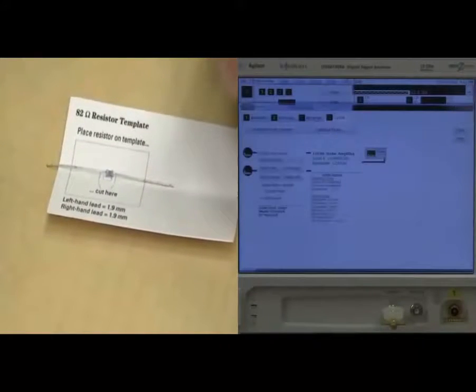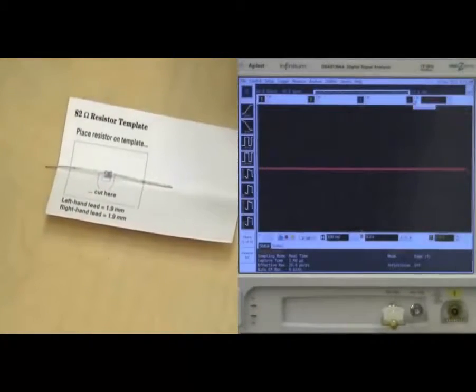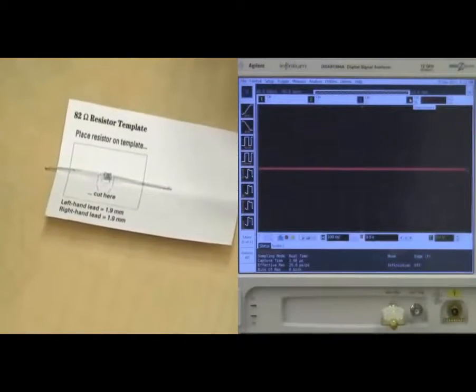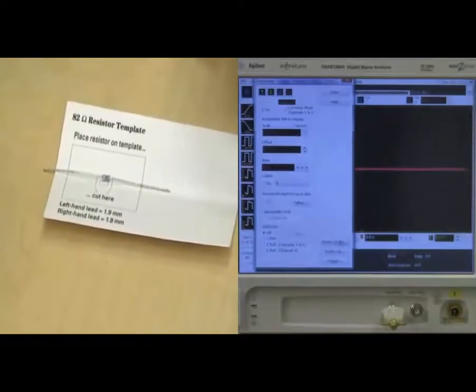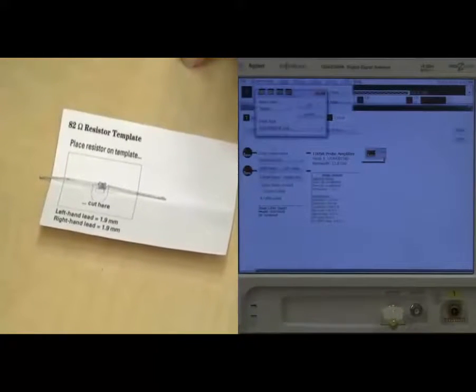Now, when it's time to calibrate the probe, we'll want to select the correct channel, which in this case is channel 4, and we'll simply click on the channel icon, select probe configuration, and we can add an E2678A head from the drop-down menu.